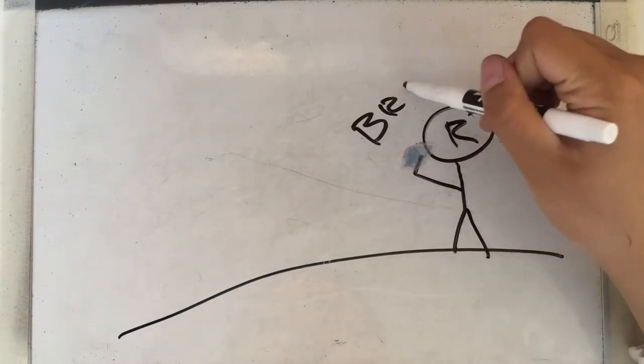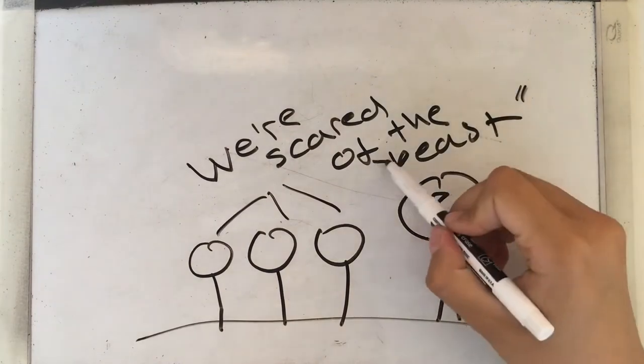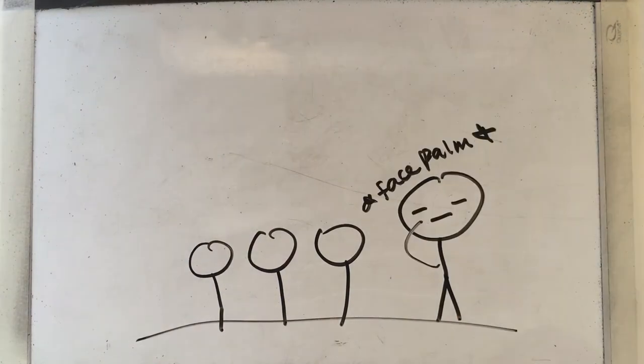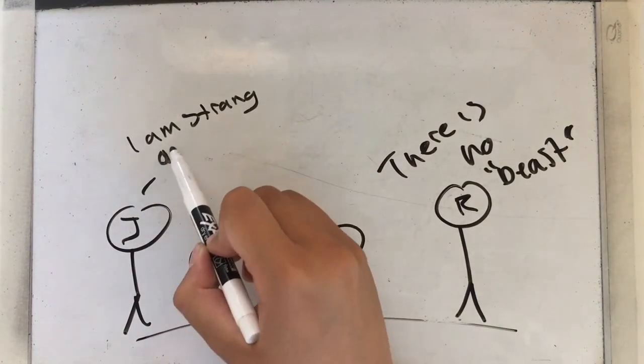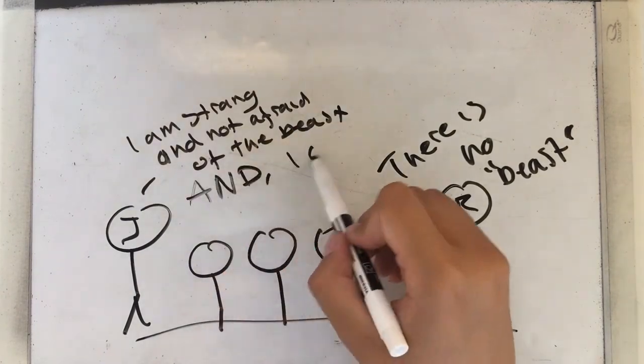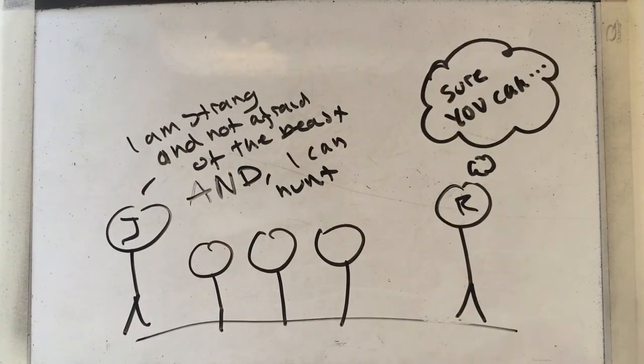Later that day, Ralph calls another meeting and finds out that most of the kids are afraid of the beast. While he tries to deny that idea, Jack states that he does not fear the beast because he is strong and capable of hunting.